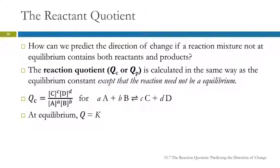It is calculated exactly the same way. So the expression for Q is the same as for K, the equilibrium constant. The difference is the reaction quotient is calculated somewhere other than at equilibrium.